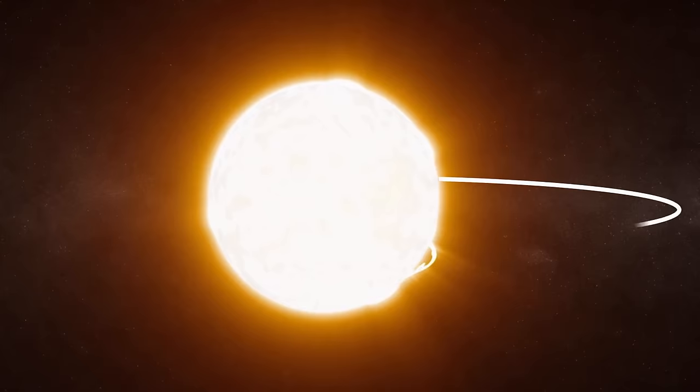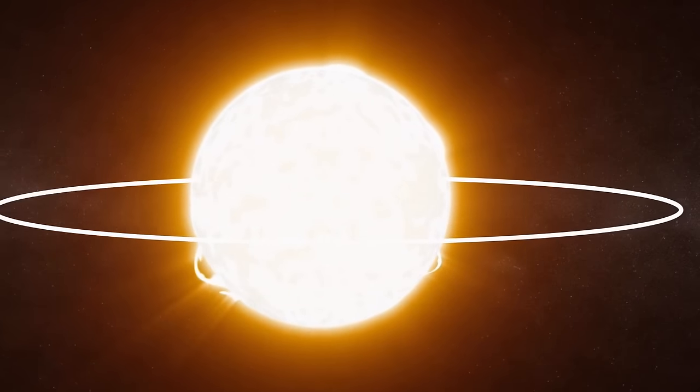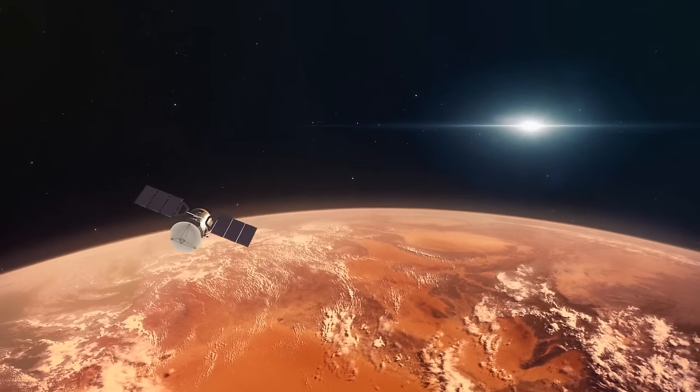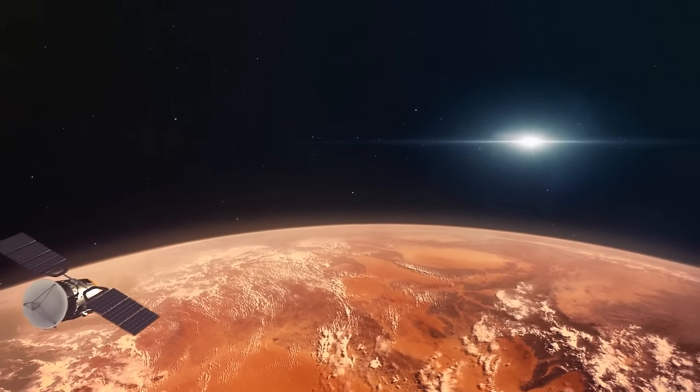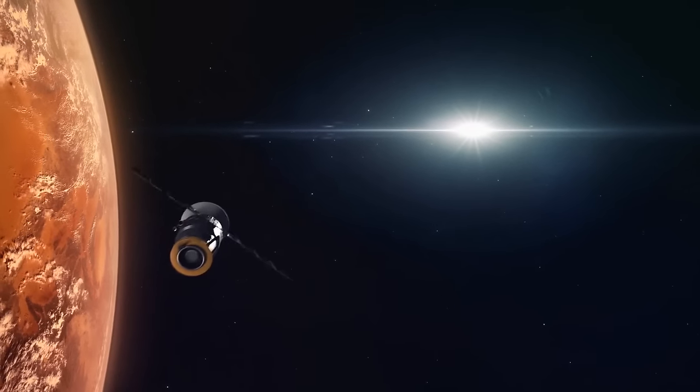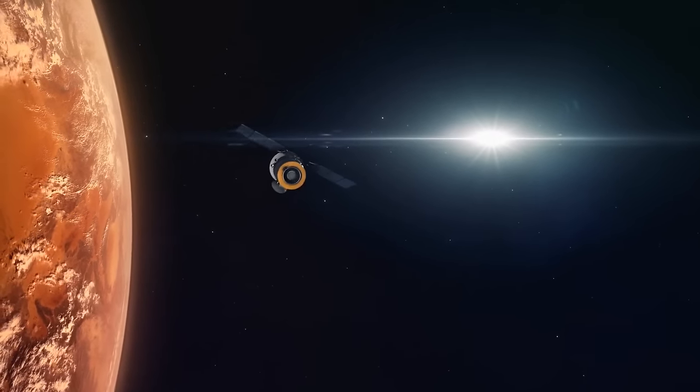On its way from the Earth to the sun, the probe circled around our neighbor, Venus. All it had to do was enter the planet's gravitational field and let it attract itself. At this point, our space probe got an extra boost, and it didn't need to waste any fuel.